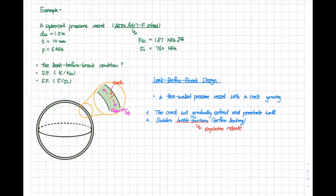We have to find the crack lengths. Based on our material properties, we can find the maximum crack length. If the maximum crack length is greater than the thickness, that means the crack may gradually extend and penetrate the wall — so the leak before break design is met. This is the desired design because we don't want an explosive release. However, if the maximum crack length is below the thickness, it will be brittle fracture before leaking, and the leak before break design is not met.